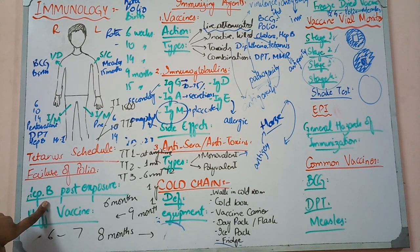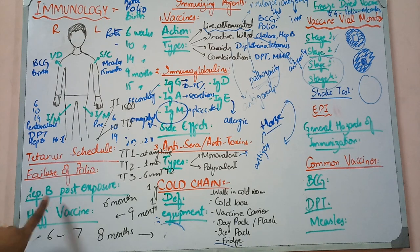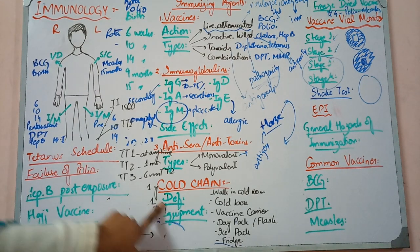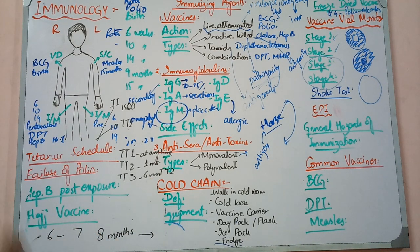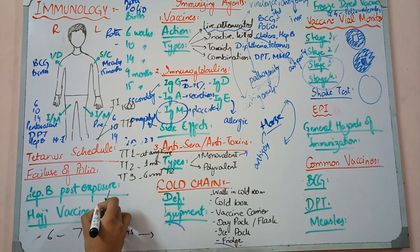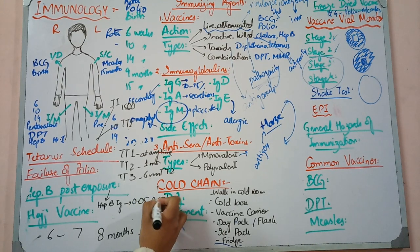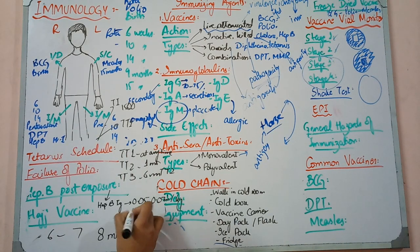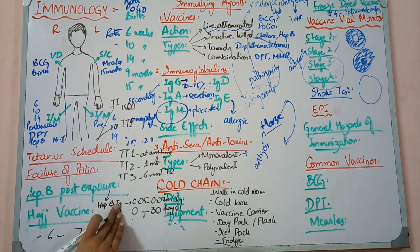Now we have post-exposure prophylaxis of Hepatitis B. There are two types of questions. One is that a doctor has a needle-stick injury with Hepatitis B positive blood. The other is an infant child whose mother was Hepatitis B positive. What do we need to do? The first thing is to give Hepatitis B immunoglobulin - 0.05 to 0.07 ml per kg body weight - given at 0 days, and one dose at 1 month or 30 days.